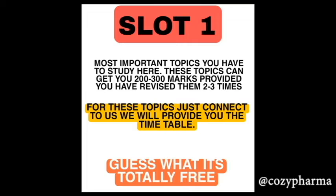In slot one you have the most important topics. If you cover these, you'll be getting around 200 to 350 marks. If the paper comes easy — which is very expected since NTA is organizing it — covering slot one can get you between 200 to 350 marks, provided you have revised it two to three times. If your memory is very volatile, you may need more revisions, but on average three to four revisions is quite good enough.